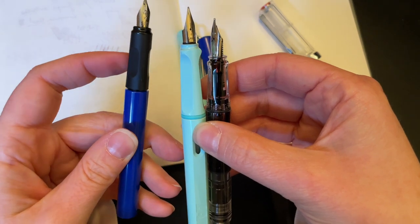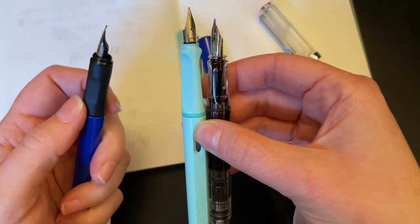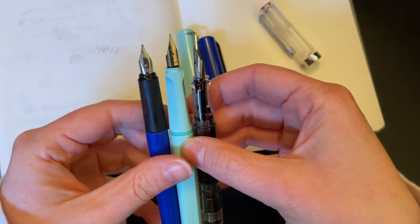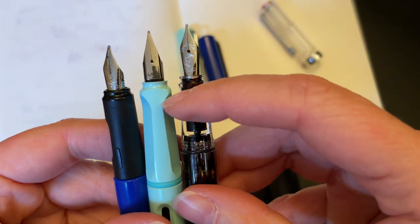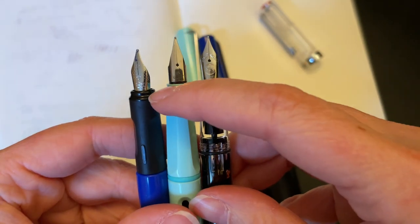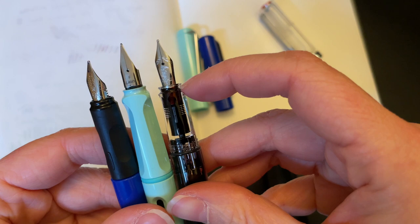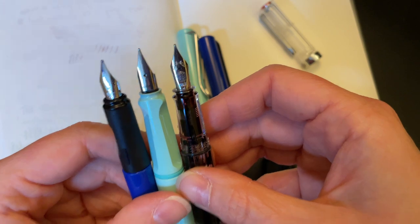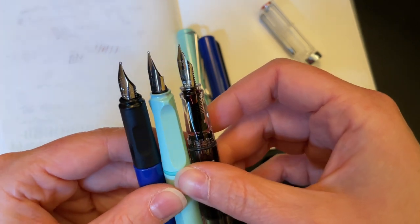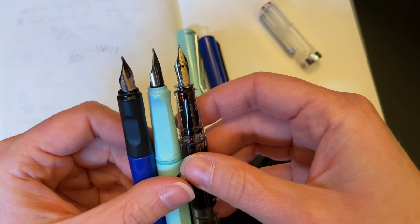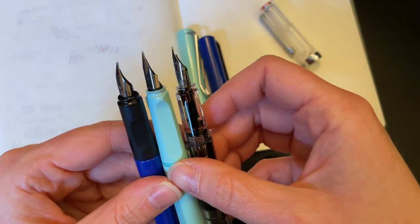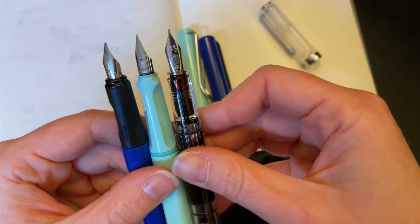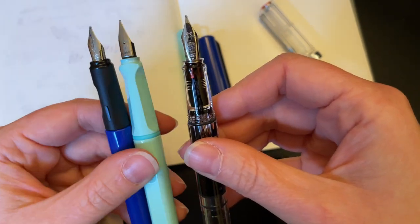One thing that's interesting about all of these is that they all have these little dip sections at the very end. I don't think that has anything to do with the triangle grip. It's just interesting that all three of them have it. I personally hate that because ink gets stuck in there when you dip it into a bottle to fill it, and it drives me bananas.